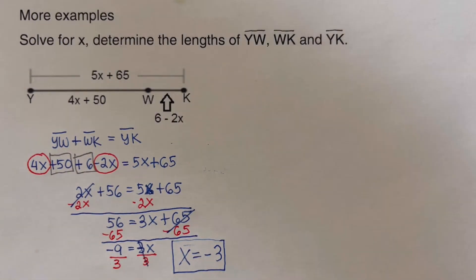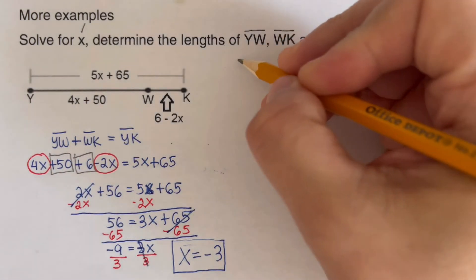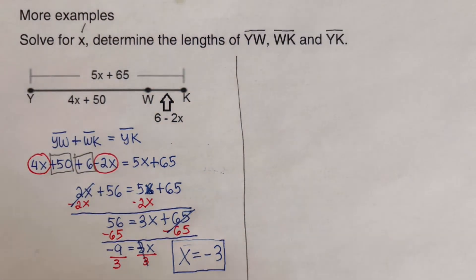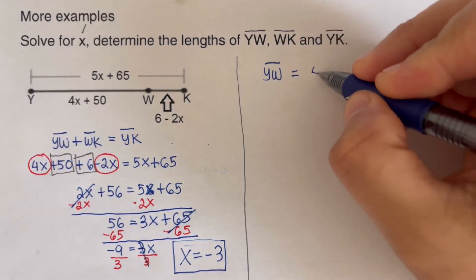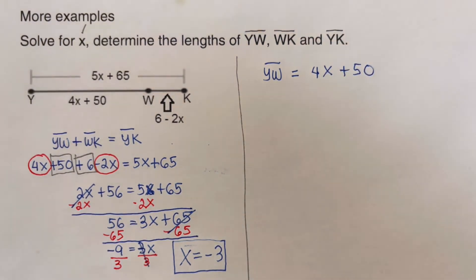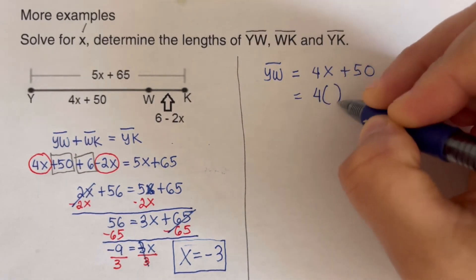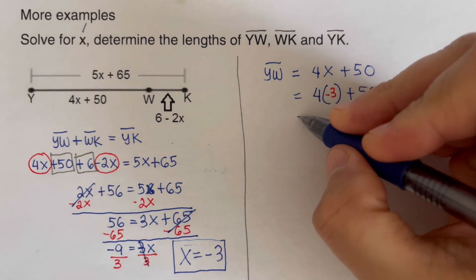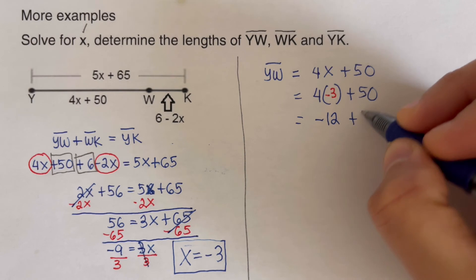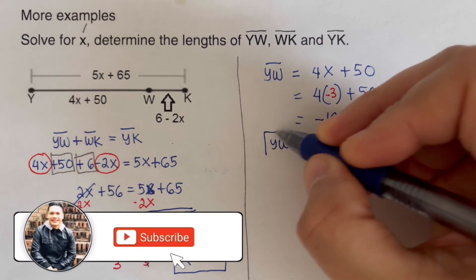So X equals negative 3 is our value. Now we solve for segment YW. Segment YW is 4X plus 50. Plugging in X equals negative 3: 4 times negative 3 is negative 12, plus 50 is 38. So line segment YW is 38.